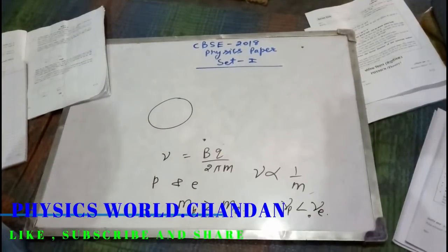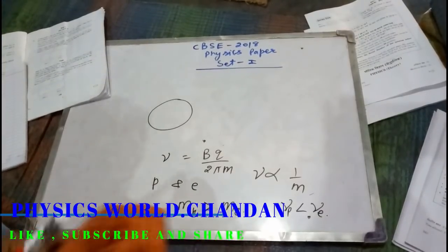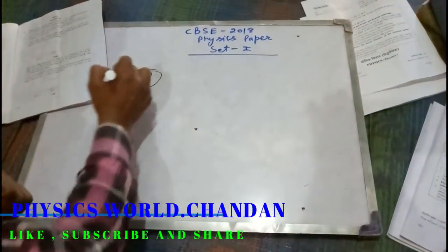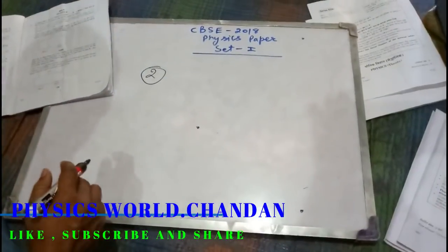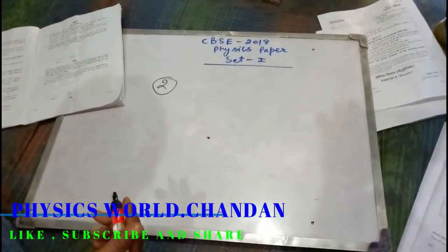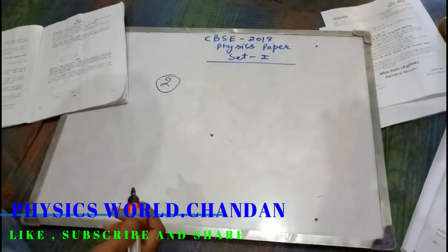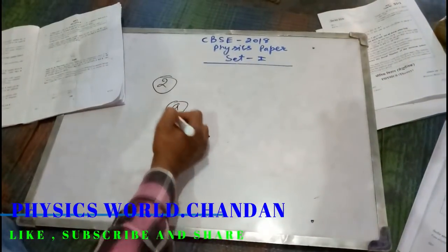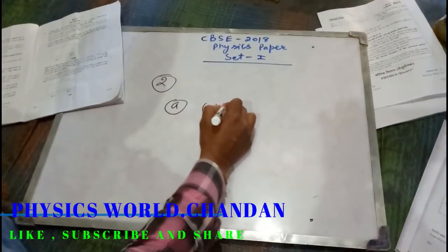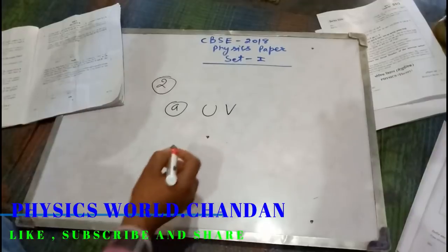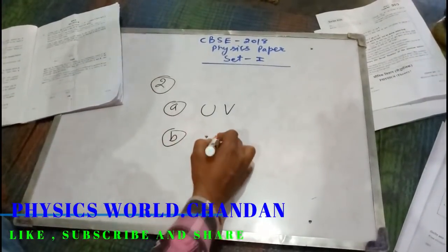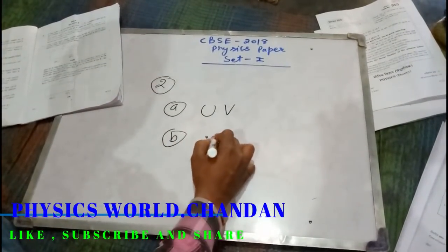Ab hum aage badhenge yahan par second question. Second question is: name the electromagnetic radiation used for — first part — water purification. Water purification ke liye ultraviolet radiation use hoti hai. Second part hai surgery — eye surgery ke liye infrared radiation use hogi.